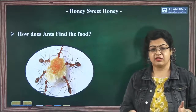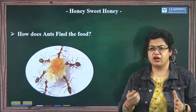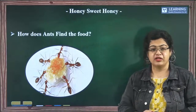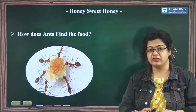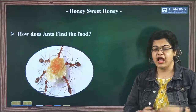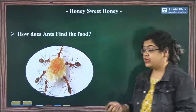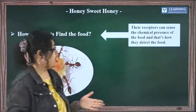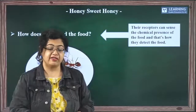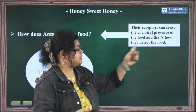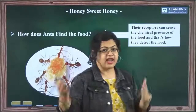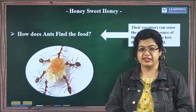Have you ever seen that if you drop a sweet flatbread, any bread, or a chocolate on the ground, the ants gather around it? But how do the ants sense that? Have you ever thought of it? The ants sense because of the receptors — their antennae. The receptors can sense the chemical presence of the food, and that's how they gather on the food and carry it to their home. They are very hardworking, isn't it?